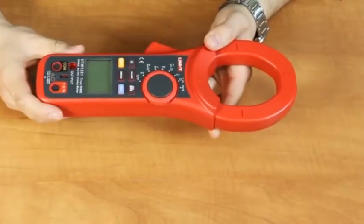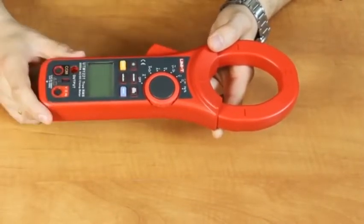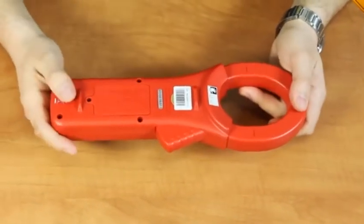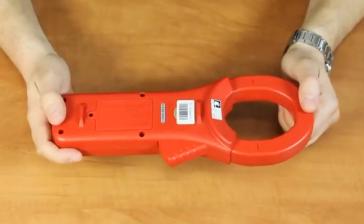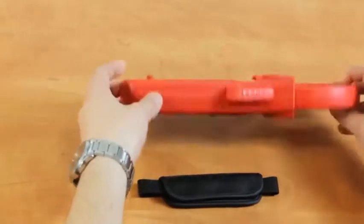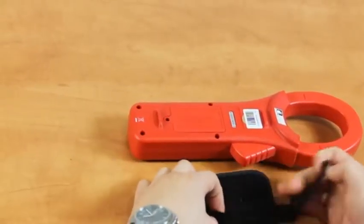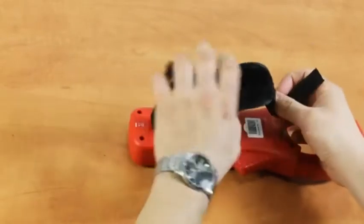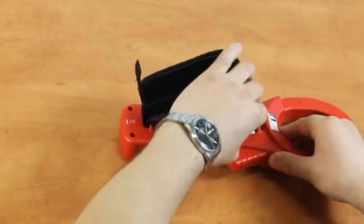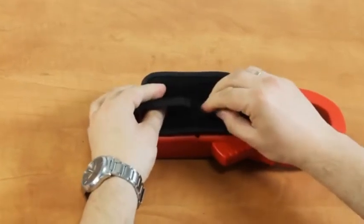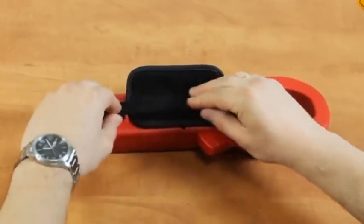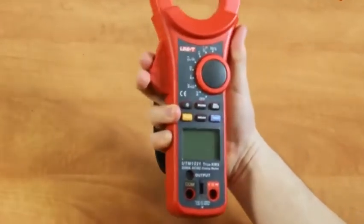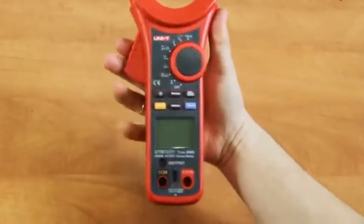The front panel houses a rotary switch for measuring function selection, additional function buttons, a display, and probe connection terminals. There is a battery compartment and also a strap lock. The strap is attached in the following way. Now the meter securely lays in the hand and it won't slip out.